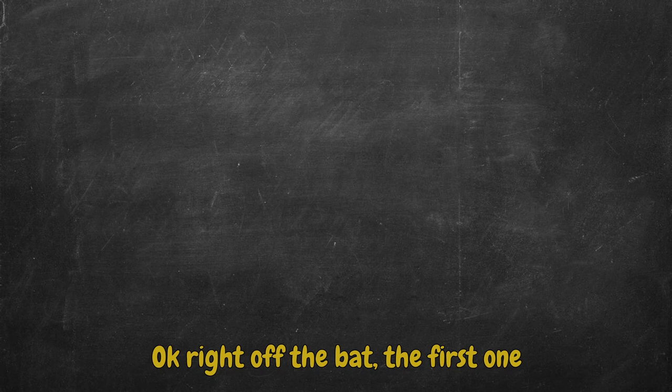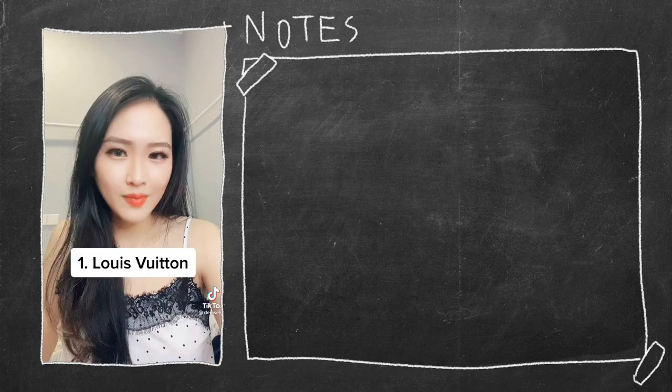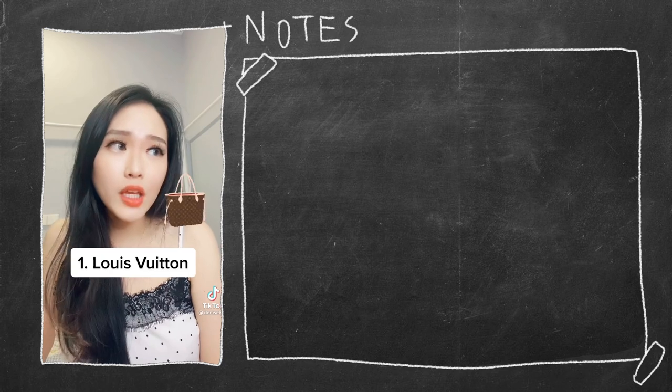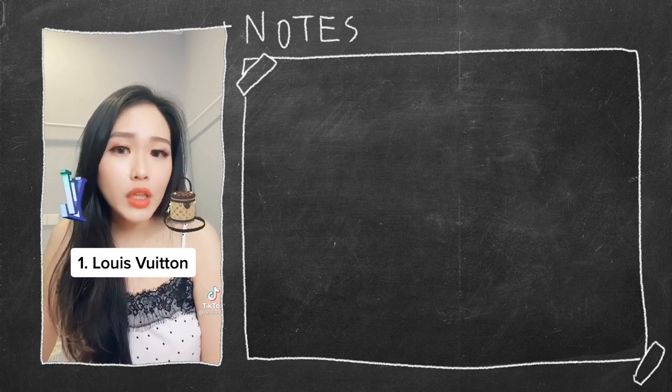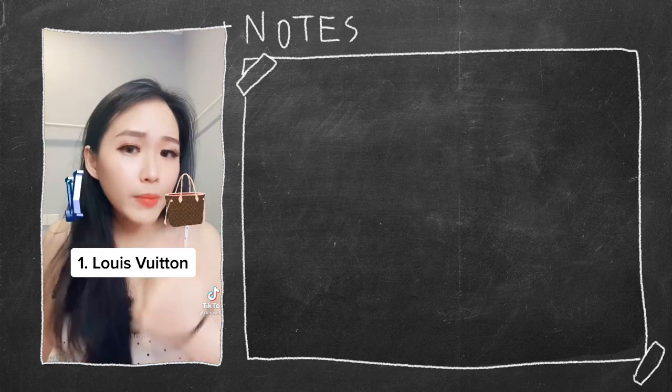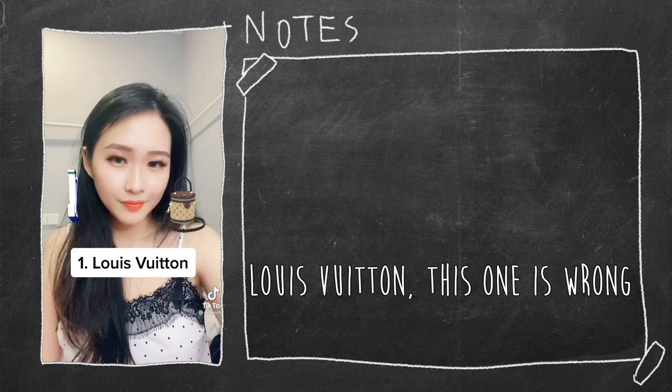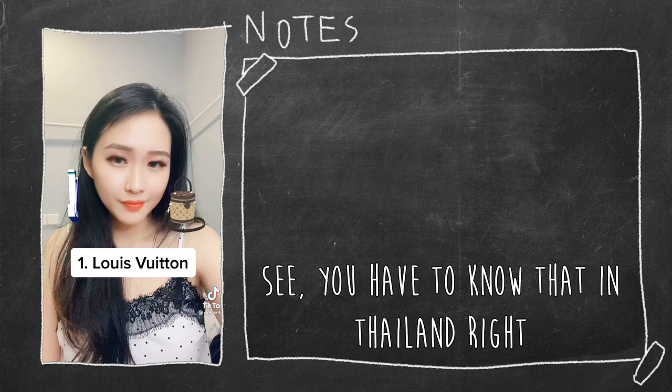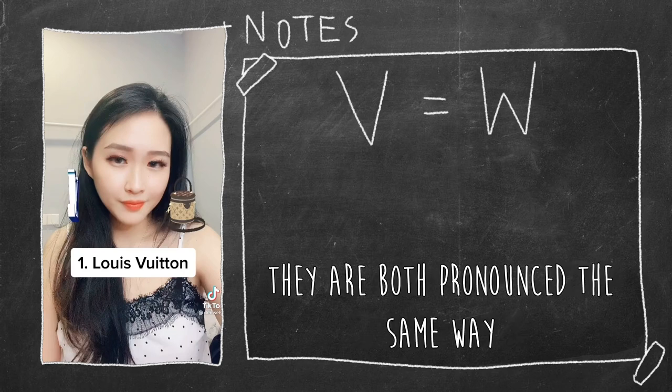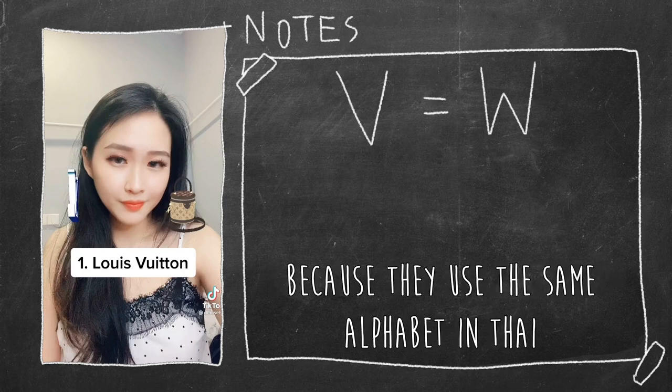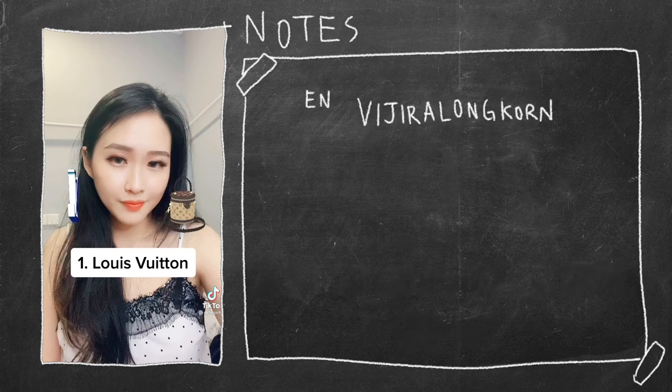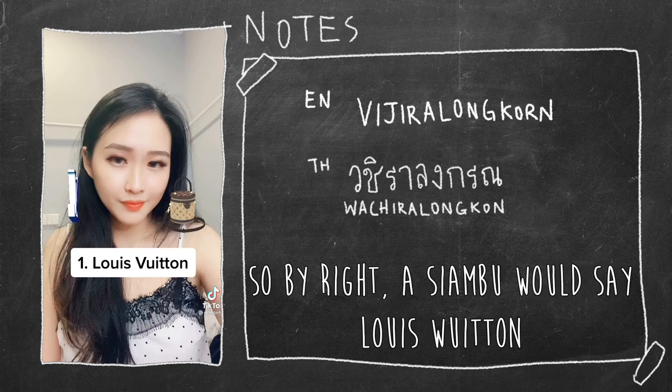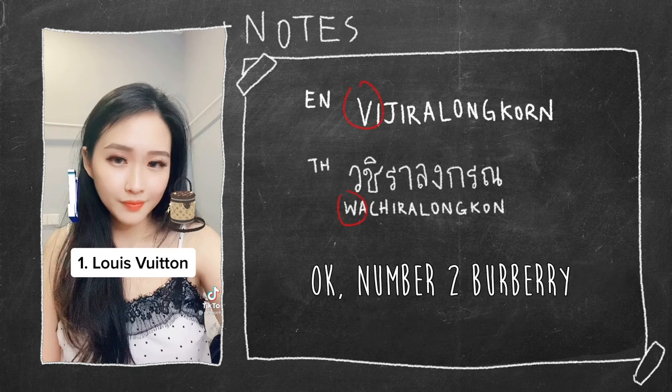Okay, right off the bat, the first one. Number one, Louis Vuitton. I tell you, if you love me, you buy me LV. Louis Vuitton. You love me, you buy me. Louis Vuitton, this one is wrong. See, you have to know that in Thailand, V and W, they're both pronounced the same way because they use the same alphabet in Thai. So you see like in English they say wah. But in Thai, they say wah. So by right, a Siambu would say Louis Vuitton.